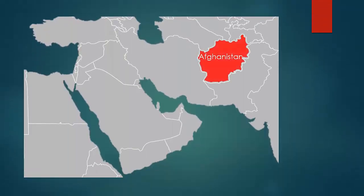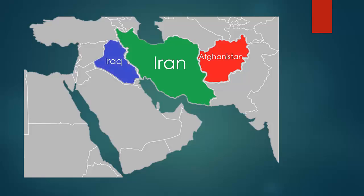First is Afghanistan, located in the northeast of our map. Next is Iran, located west of Afghanistan — it can be remembered as a cat. To the west of Iran is Iraq. Southeast of Iraq is Kuwait, a very small country.